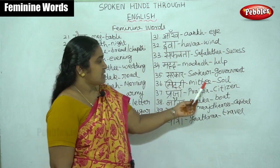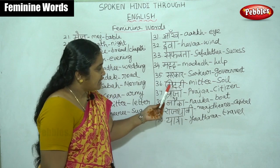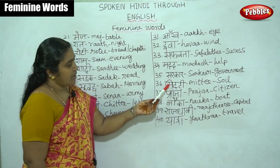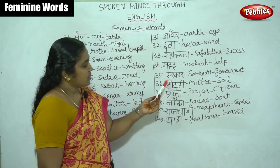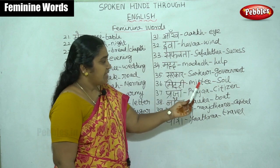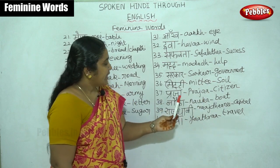Then 'mitti'. Mitti means soil and it is feminine. Note the 'i' sound — mitti. Then 'praja'. Praja means citizen, and citizen also comes under feminine gender.